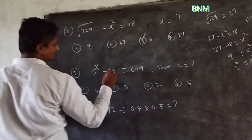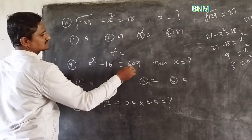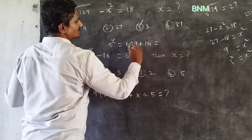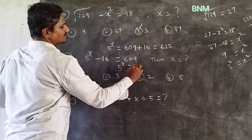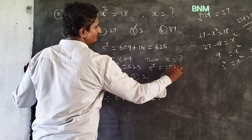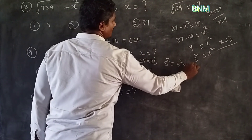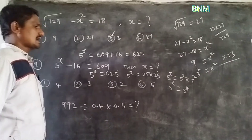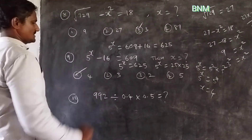Next: 5 power x minus 16 is equal to 690. So 5 power x minus 16 equals 625. Since 625 equals 5 squared into 5 squared, 5 power x equals 5 to the power 4, so x equals 4. First option is the right answer.